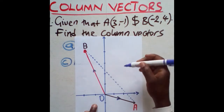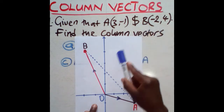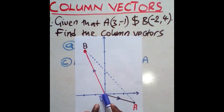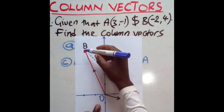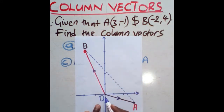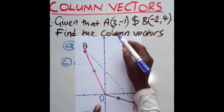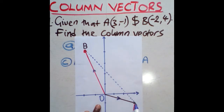To find the column vectors, first plot the position vectors. For B, that means OB — from O to B — so you draw this as your position vector with the arrow pointing to B. For A, that means OA — from O you come to A and draw an arrow there. This is the position vector for A.